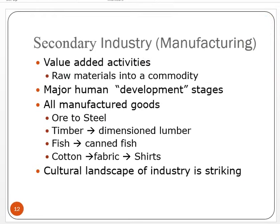The second industry type is secondary industries, which people often think of more simply as manufacturing. This is when primary resources are worked in some way in a factory so that value is added. A major stage of this was the Industrial Revolution, where mass processing on conveyor belts began. You take ore and smelt it into steel, turn raw logs into dimension lumber, catch fish and turn it into frozen or canned product, or turn cotton into shirts — you've taken raw material and added value to it.